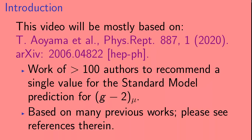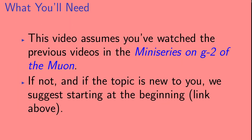This video will be mostly based on the paper by Aoyama et al. This paper is a work of more than 100 authors to recommend a single value for the standard model prediction for G-2 of the muon, and is also based on many previous works, so please see the references in that paper as well. This video assumes that you've watched the previous videos in the mini-series on G-2 of the muon. If you haven't, we suggest starting at the beginning of the playlist — you can find a link above.